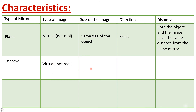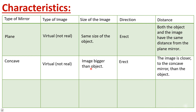For the concave mirror: the type of image is also virtual — not real. The size of the image is bigger than the object. The direction is also erect. And the distance: the image is closer to the concave mirror than the object.